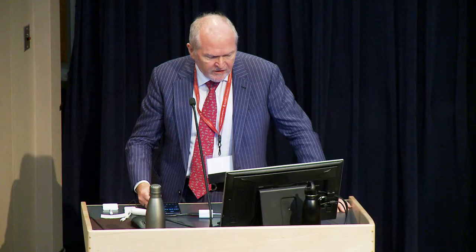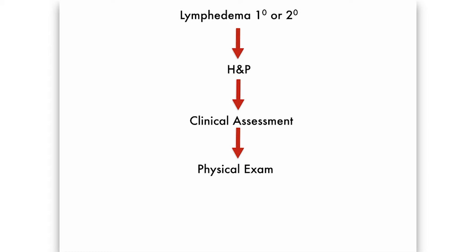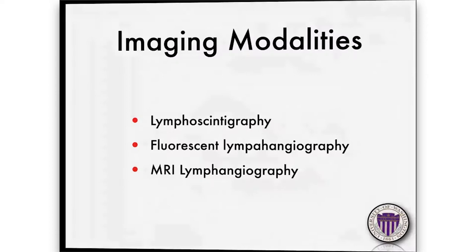My only disclosures are book royalties. Regardless of the type of lymphedema that you're talking about, you need to get a history and physical. You need to know every detail of the patient's history and physical, including travel details, and you need to assess the patient clinically — see the limb, the body part, see whether there's any infection or skin changes. Your clinical assessment is very important, and imaging is very, very helpful. There are several modalities of imaging that we can use.